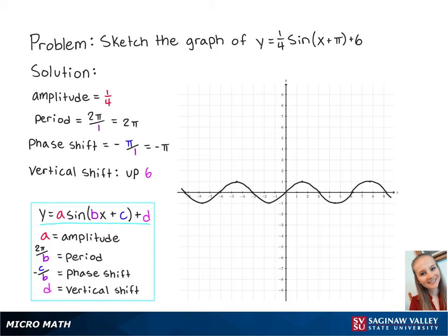Next, we will plot and label our important points. Shifting left pi is the same as shifting right pi, and since we also have a vertical shift up 6, our starting point is at pi 6. Since the period is equal to 2 pi, our last point is at 3 pi 6.